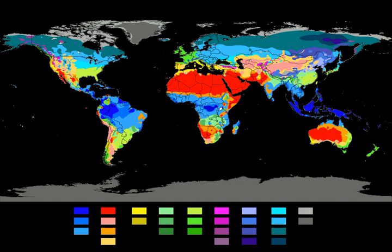Mediterranean climates usually occur on the western sides of continents between latitudes of 30° and 45°. These climates are in the polar front region in winter, giving moderate temperatures and changeable, rainy weather. Summers are hot and dry due to the domination of subtropical high-pressure systems, except in immediate coastal areas, where summers are milder due to cold ocean currents that may bring fog but prevent rain.